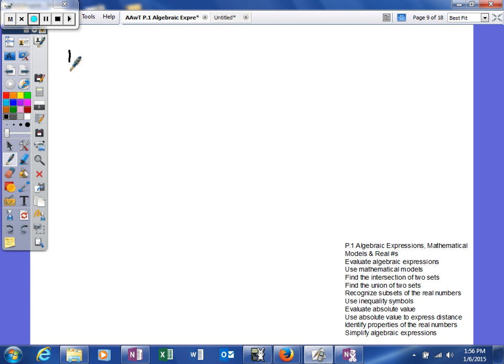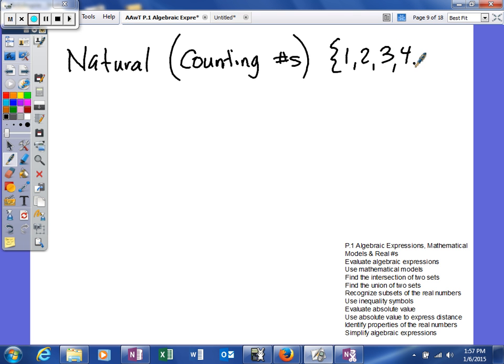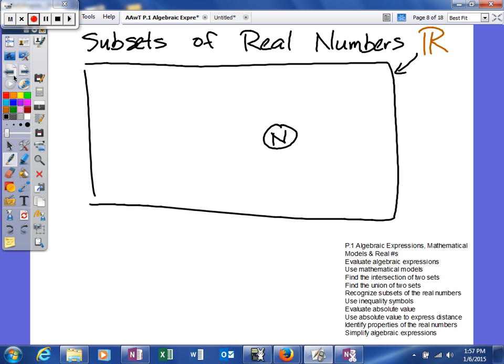So the natural numbers are also called counting numbers. The reason they're called counting numbers is because of how we count. Our natural numbers are going to be the set of numbers 1, 2, 3, 4. When you're playing hide-and-go-seek with a kid and you say count to 10, you don't start at negative 5, negative 4, negative 3. Those are your counting numbers. Anything that falls in that category will be a natural number.